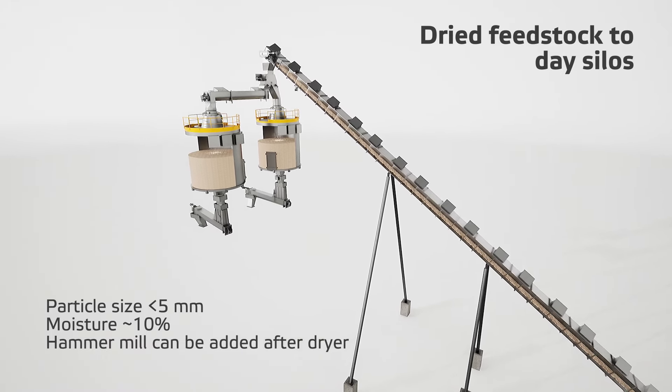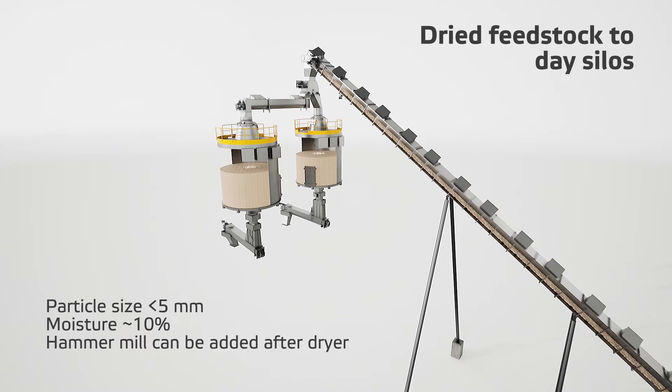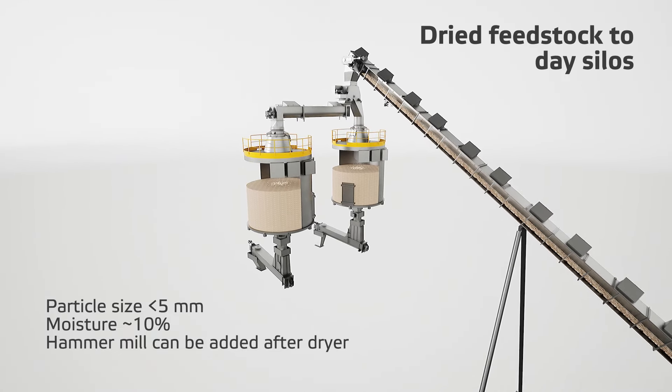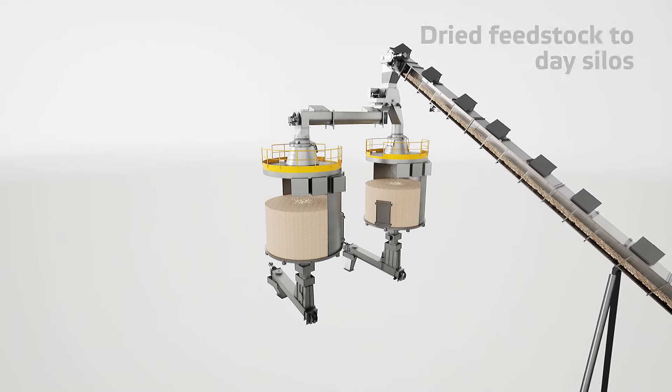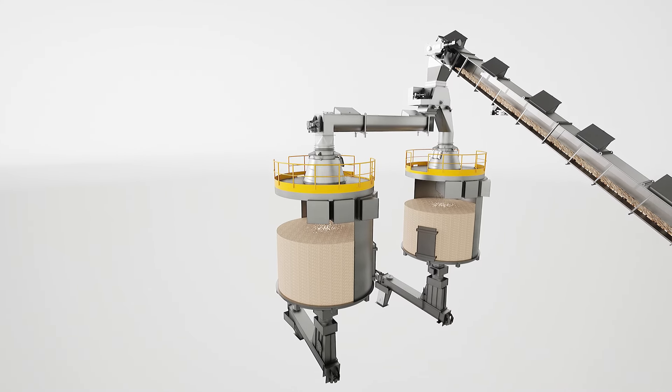Dried feedstock is fed to the day silos. The day silos work as a buffer and retention bins below them ensure steady feedstock flow to the pyrolysis reactor.